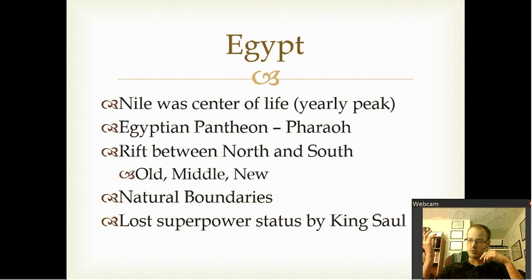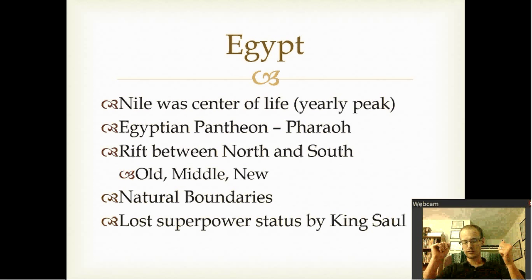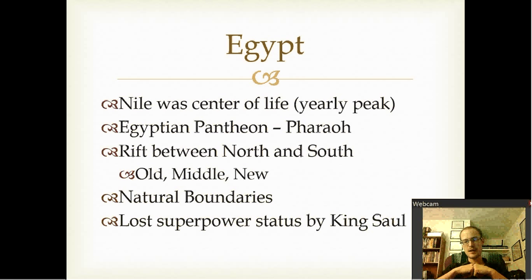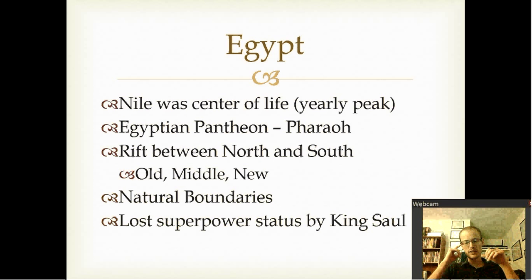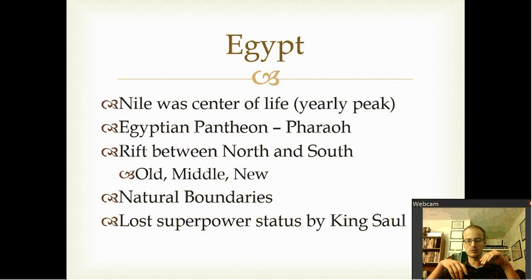At some times the pharaoh was considered a god. The sun was sometimes considered a god, the Nile, different things like that. It's hard to say this was the Egyptian pantheon because it did evolve and change so much through the Old Kingdom, Middle Kingdom, and New Kingdom. They had different gods — Osiris, Horus — all these different gods in charge of different things. The Egyptian pantheon has really been pretty flexible and changed a lot throughout history.